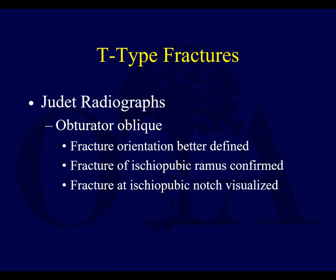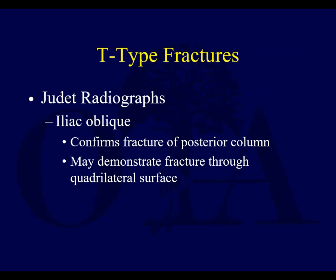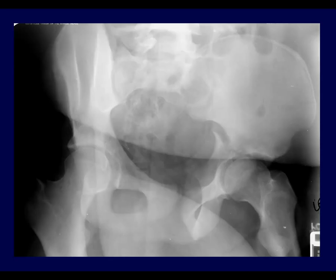On the obturator oblique view, you're going to see the fracture orientation better, including a fracture of the ischiopubic ramus. As shown on this obturator oblique view, you see disruption of the iliopectineal line and a fracture line coming down — that's what makes the T-shaped fracture. On the iliac oblique, you're going to see the fracture of the posterior column, as shown here with that disruption.